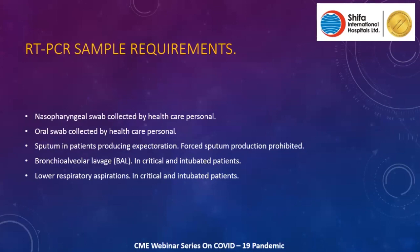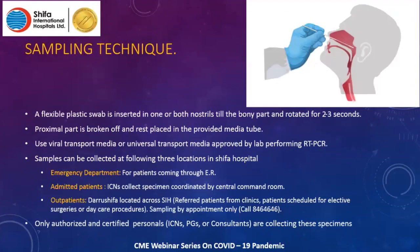Sputum can also be used but should only be collected from patients who are actively producing expectoration; sputum production should not be encouraged in sick or intubated patients. Bronchoalveolar lavage or lower respiratory aspirations can also be done. The technique involves inserting a flexible plastic swab into one or both nostrils until the bony part is reached, rotating for about two to three seconds.